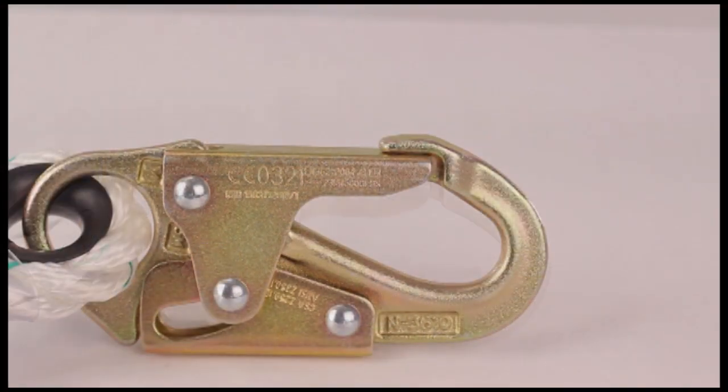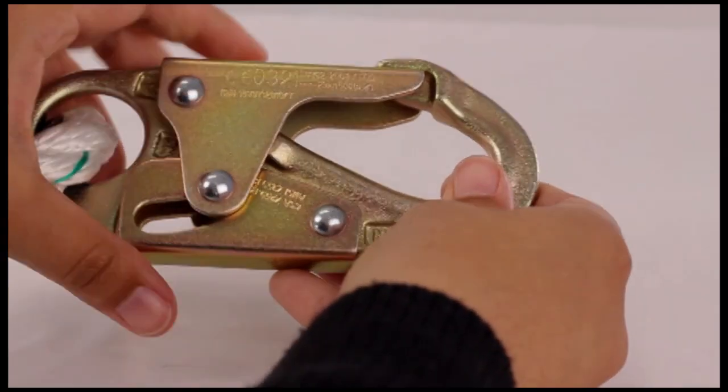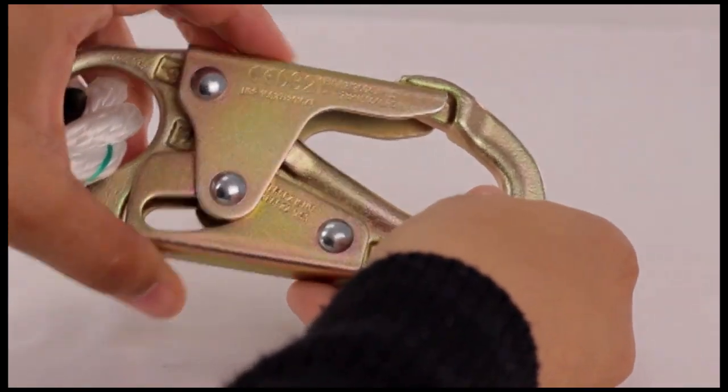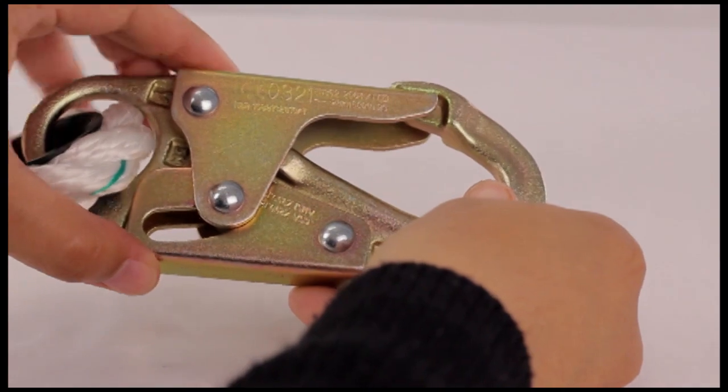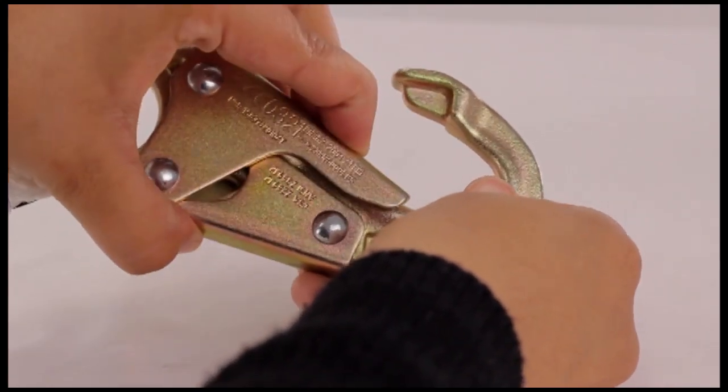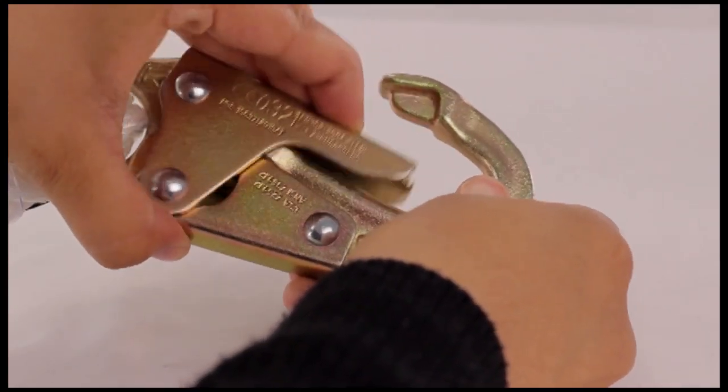To open the top lock, first disengage the bottom lock. To do this, hold the snap hook with your thumb on the bottom lock, then press it with your thumb. The top lock opens by pressing it down with your fingers. The lock should move freely.